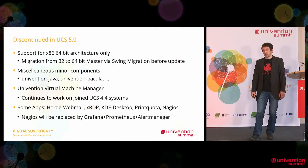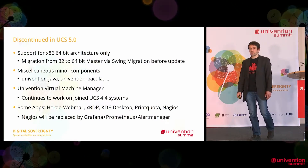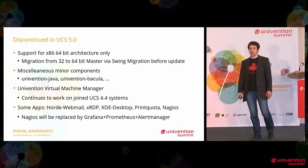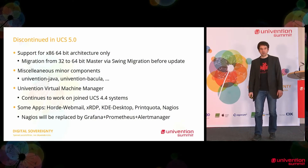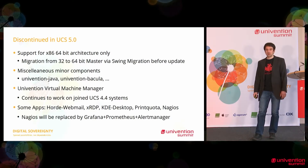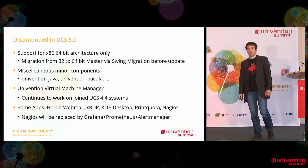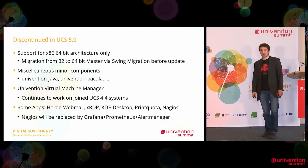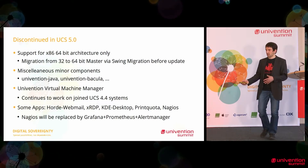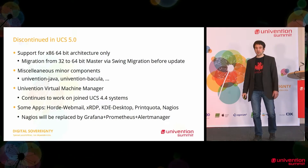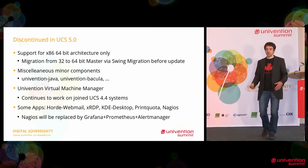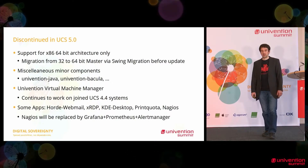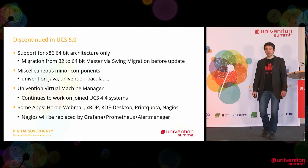Some words on the legacy aspects. As announced, UCS 5 will only be available for the 64-bit architecture. A 32-bit master needs to be migrated to a 64-bit system prior to update. That is possible via a swing migration, for instance by joining a 64-bit backup to replace the master.